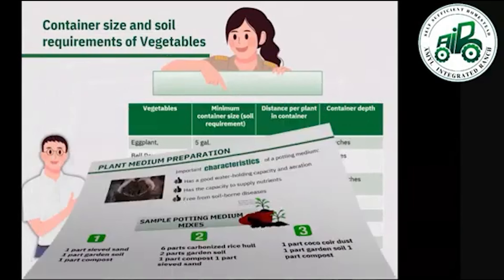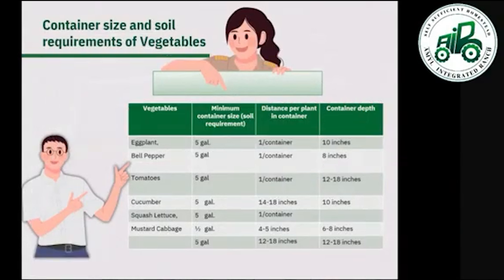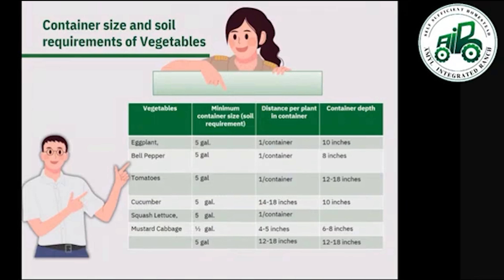Container size and soil requirements for vegetables: eggplant requires a minimum of five gallons — more than 37 kilos of soil — one plant per container, and at least 10 inches container depth. Bell pepper requires five gallons, one plant per container, at least eight inches container depth. Tomatoes require five gallons, one plant per container, and 12 to 18 inches container depth.